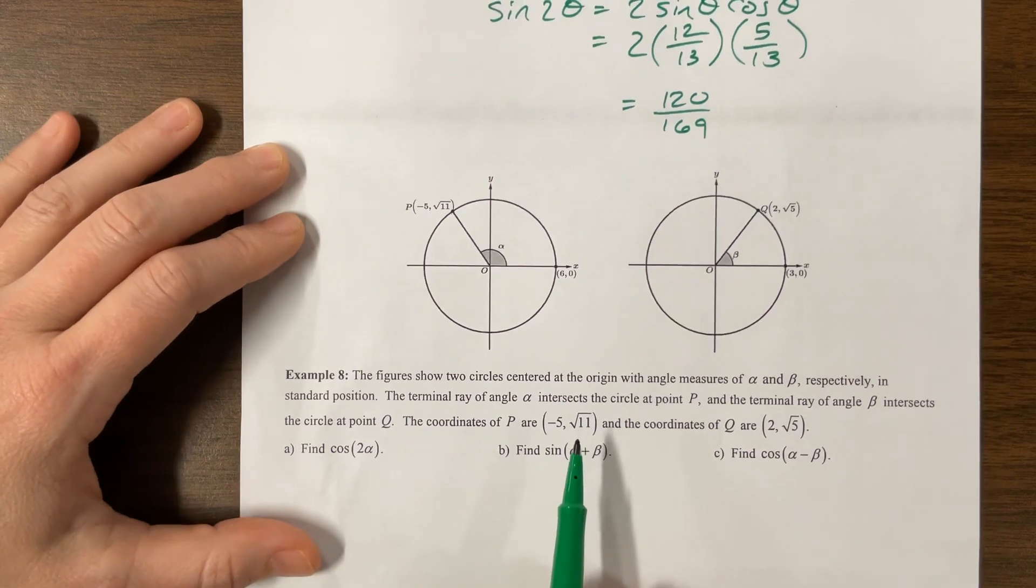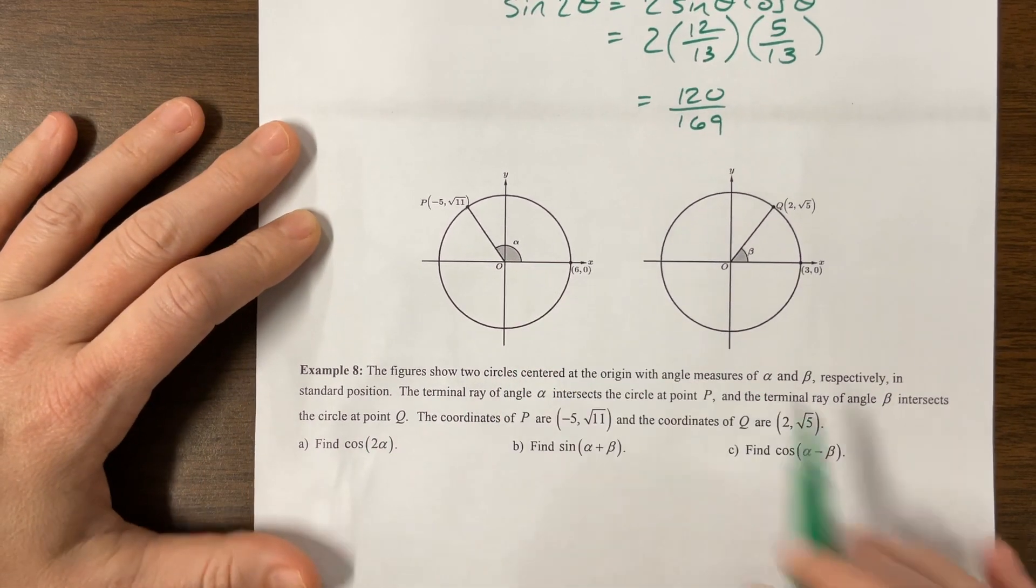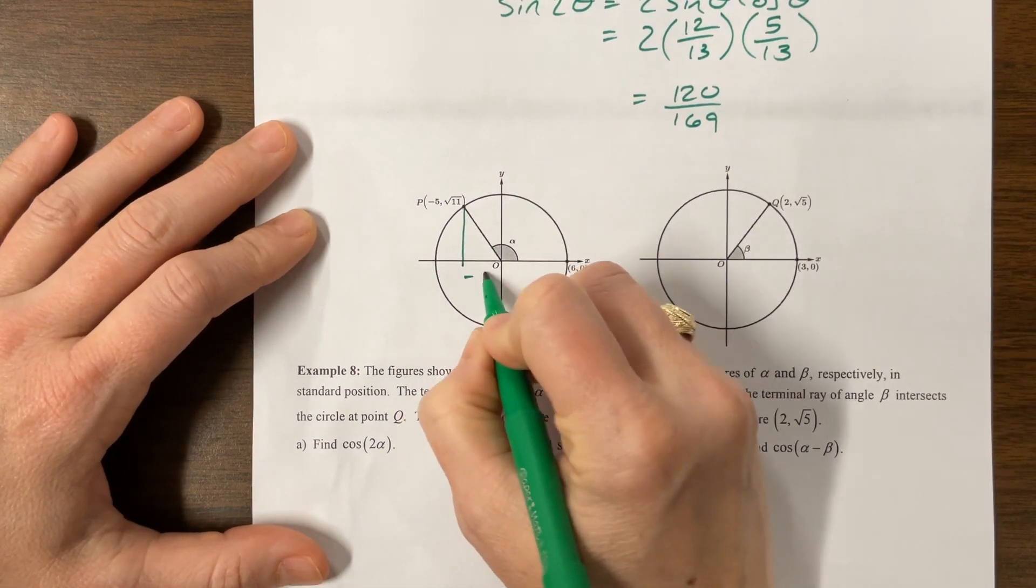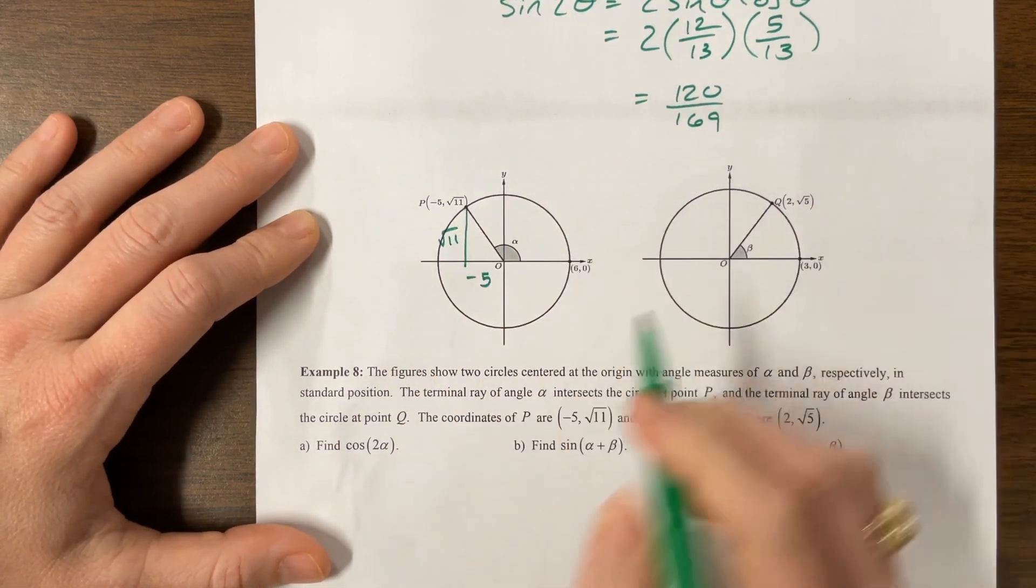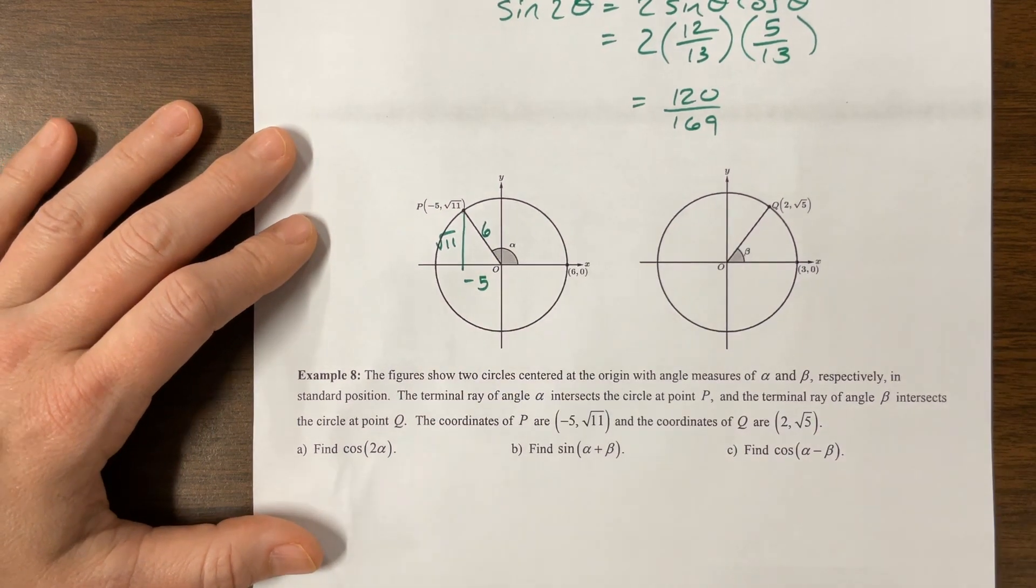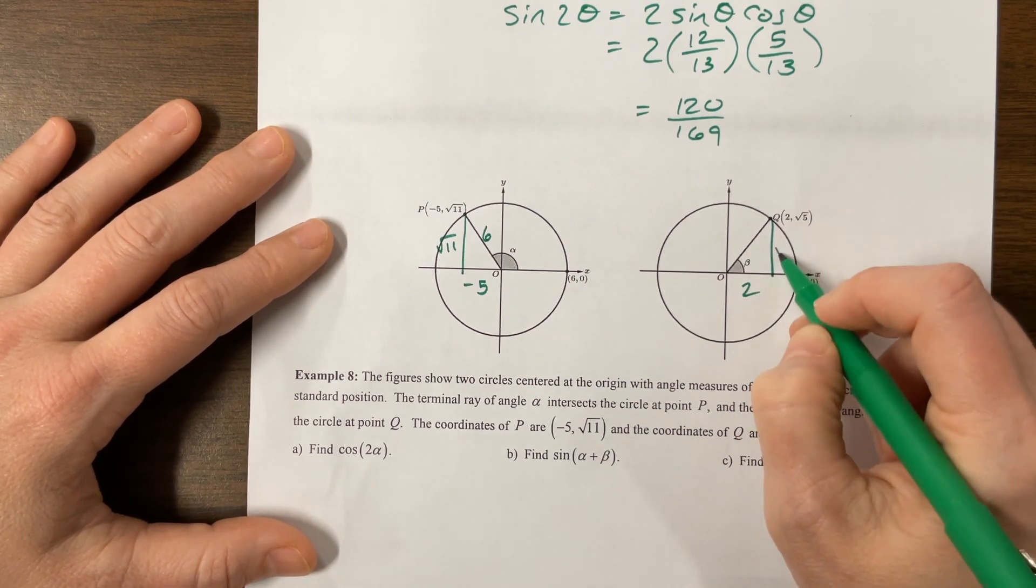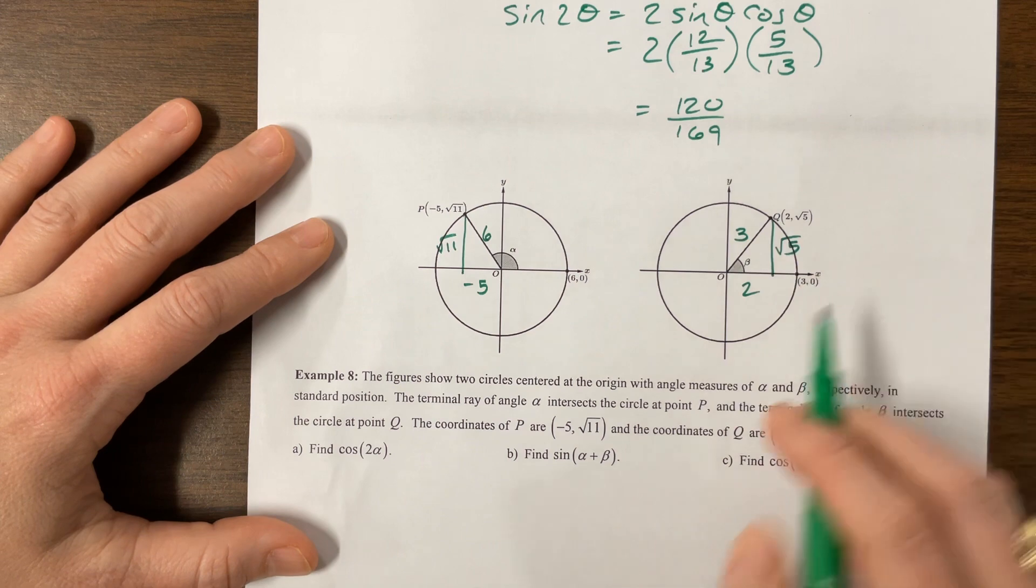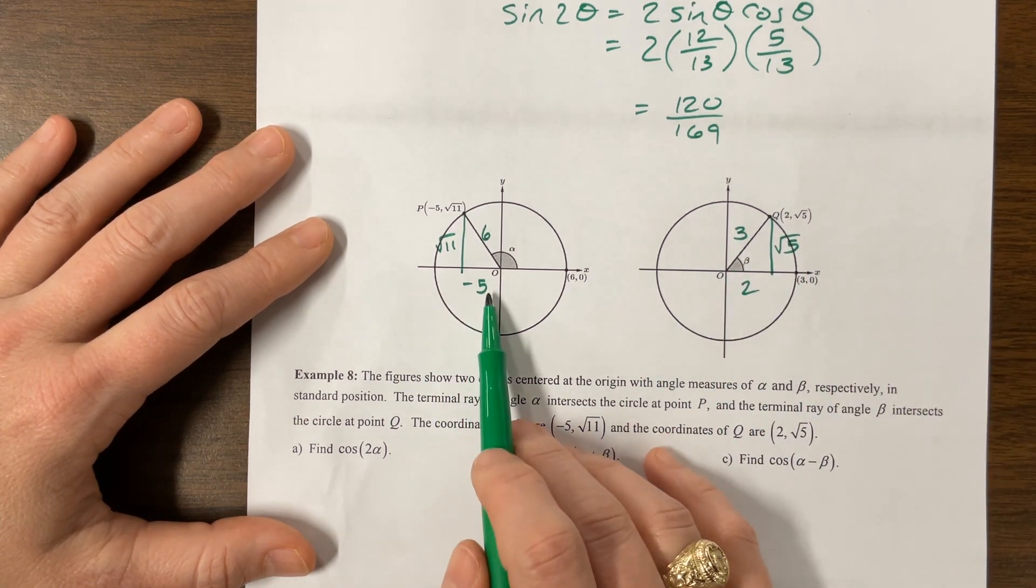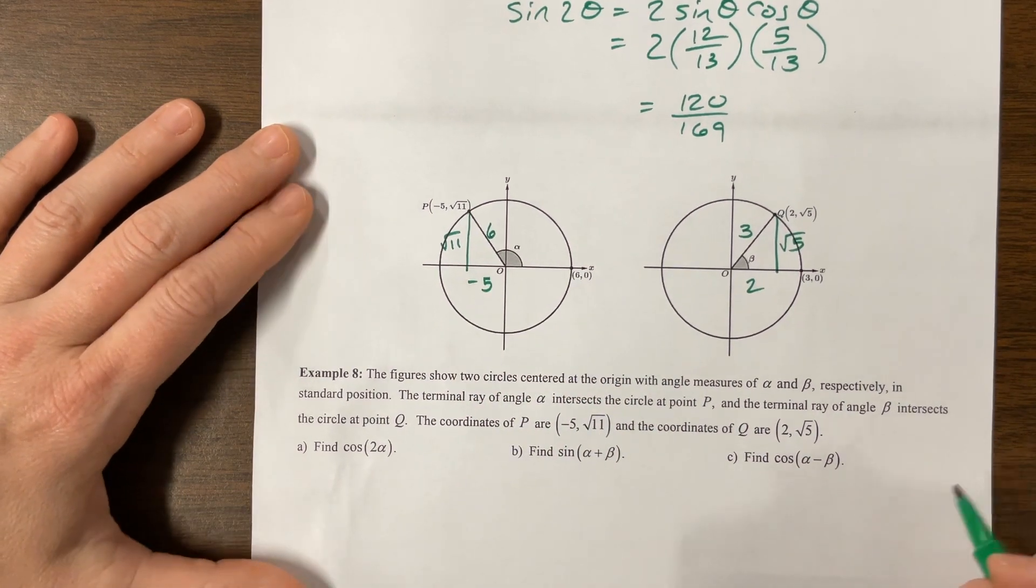Okay. Same idea with this one. If this is the point negative 5 root 11, oh, and they're telling us this is 6, okay, my radius is 6. They're giving me this one is, this is 2, this is root 5, and this we know to be 3. Does that make sense? 4 plus 5 is 9, which, yes, that works. And then 25 plus 11 is 36. Did you see how I used Pythagorean theorem to check that?